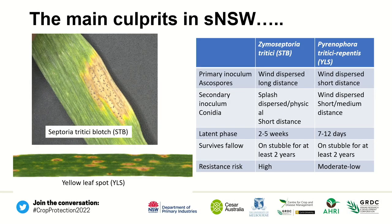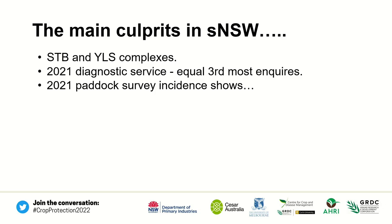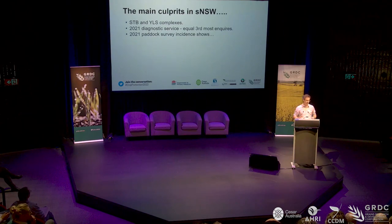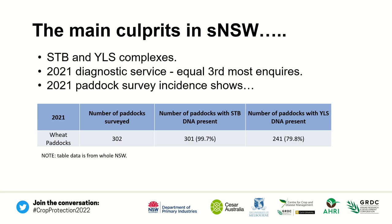Both are necrotrophic diseases with very similar dispersal mechanisms. They both have a primary and a secondary infection source, but have very different latency periods and different resistance risks. NSW DPI runs a free diagnostic service for growers and agronomists. Our 2021 paddock survey data — covering 302 paddocks — shows the proportion of DNA present throughout New South Wales. Both diseases are widespread and often co-exist in the same paddocks.